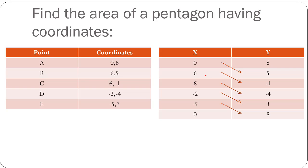And for y crosswise: 8 with 6, 5 with 6, -1 with -2, -4 with -5, and 3 with 0. You add all the x products, add all the y products, subtract both of them, divide by 2 — that's the area. As simple as that.